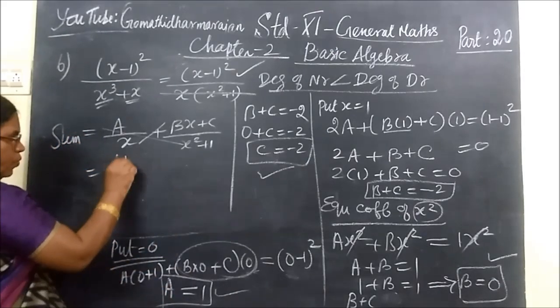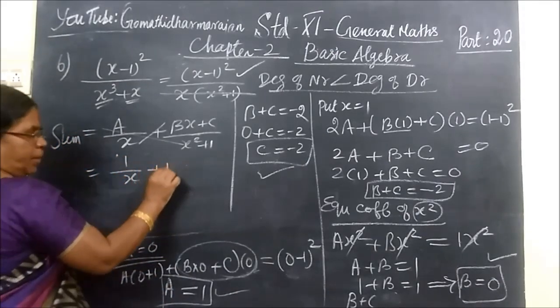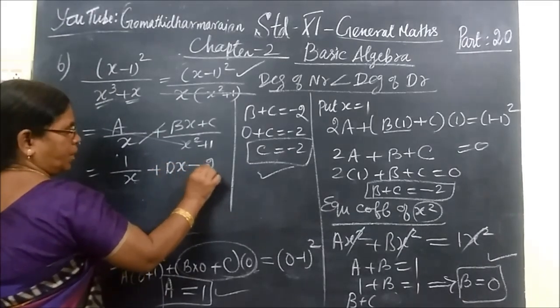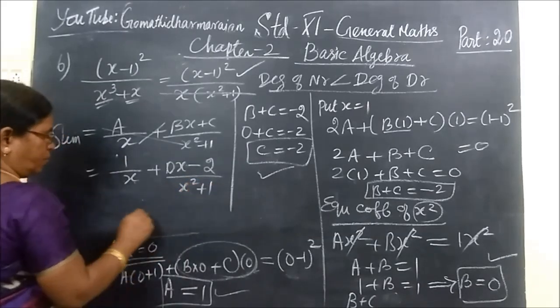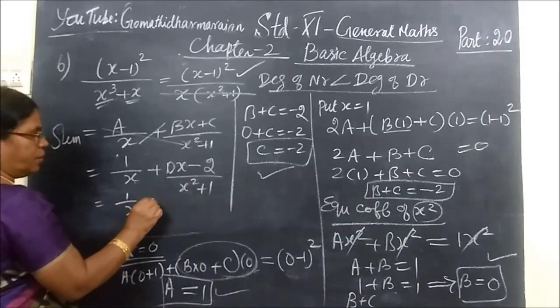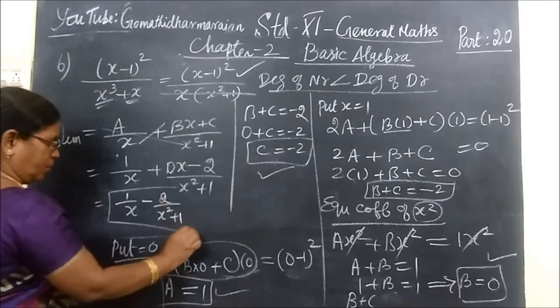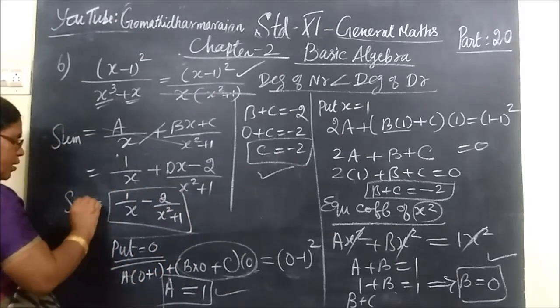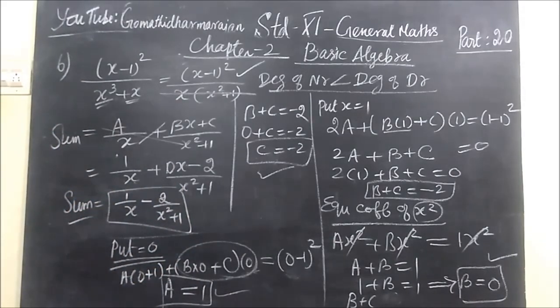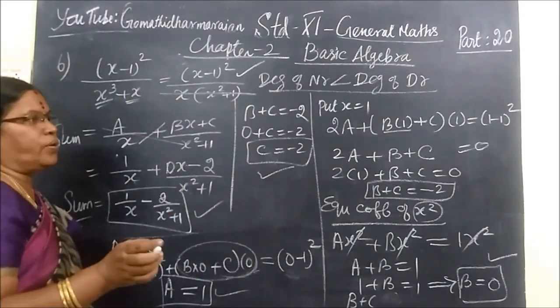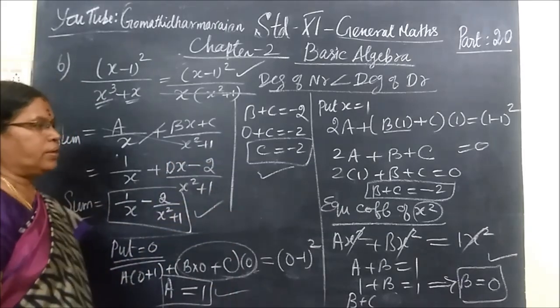Here you write: Sum equal to A value 1/x plus B value 0, so 0x plus C is -2 by x²+1. So this is equal to 1/x - 2/(x²+1). So this is the sum, which is the answer for that. Here sixth question we done. 1/x - 2/(x²+1). So partial fraction is so easy for you. You can follow this in the next class. Thank you.